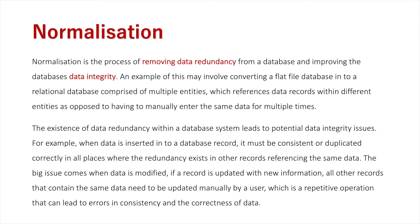The issue comes later on when that data is modified. Let's say that person moves addresses. If the record is updated with new information, all other records that contain that same data need to be manually updated about that user. So everywhere else I've referenced that user, I need to go into all those records and manually update their address. That leads to a consistency issue because if I forget one or mistype in one, the data doesn't match and that affects my data integrity, since it's a repetitive operation where mistakes are likely.